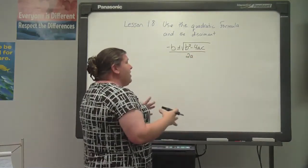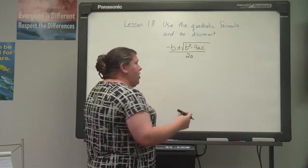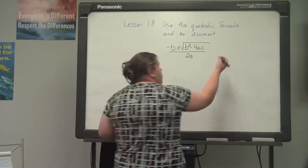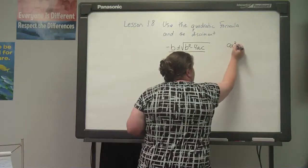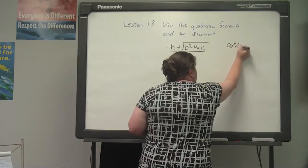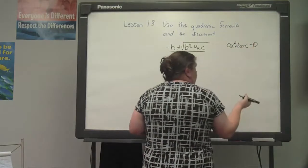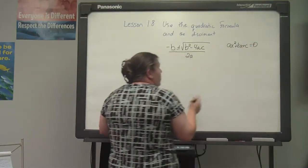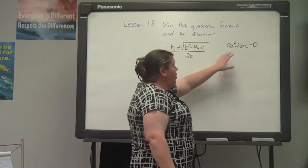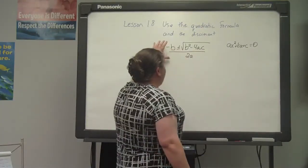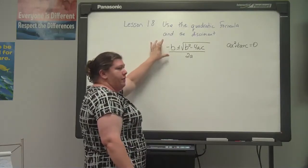What you have to keep in mind is that a, b, and c come from the original equation of ax squared plus bx plus c equals 0. So when we have our quadratic equation, we can solve it any time using the quadratic formula.